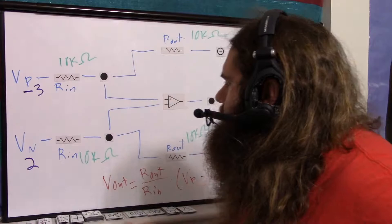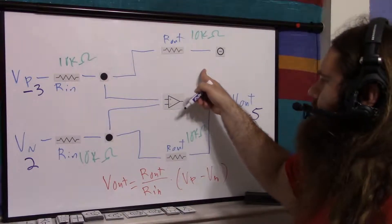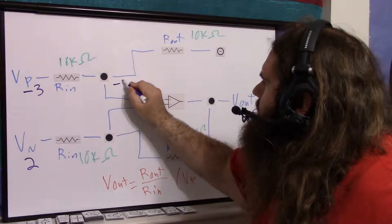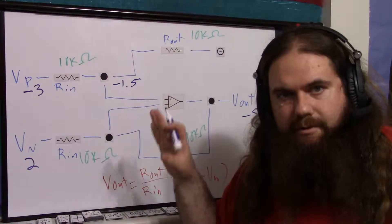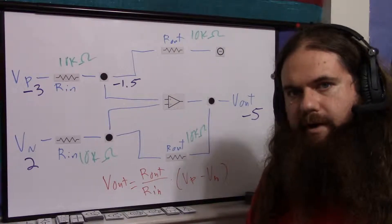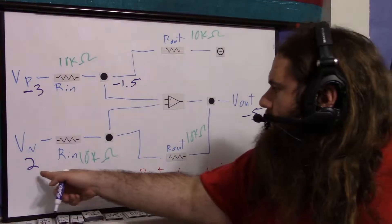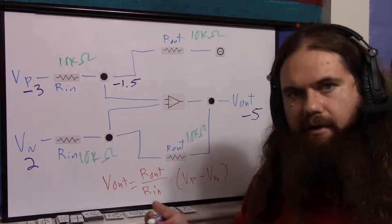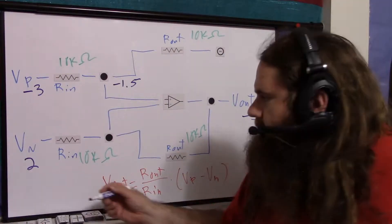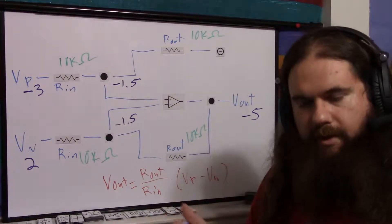Let's say vp is minus three and vn is two. Minus three minus two is minus five, so v_out should be minus five with unity gain. The voltage divider between vp (−3) and zero sets the summing point at −1.5 since the resistors are equal. The output v_out is −5, and vn is 2; those differ by seven, half of seven is 3.5, and 2 minus 3.5 is −1.5, confirming the inverting input also sits at −1.5. The inputs are equal, as required.